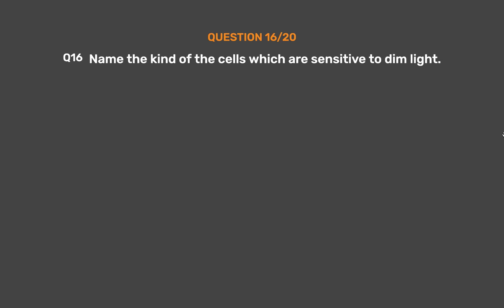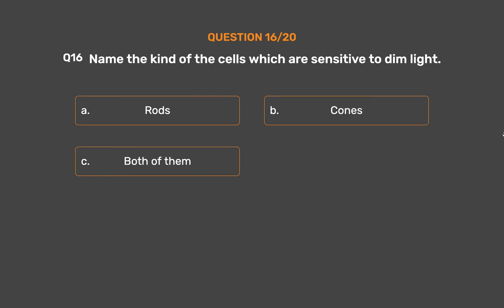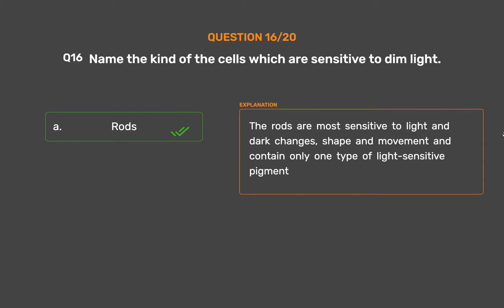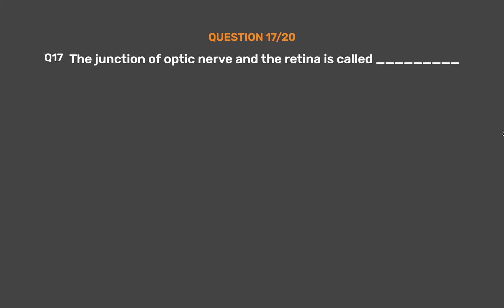Question number 16: Name the kind of cells which are sensitive to dim light. Option A: Rods. Option B: Cones. Option C: Both of them. Option D: None of these. The correct answer is Option A, Rods. The rods are most sensitive to light and dark changes, shape, and movement, and contain only one type of light-sensitive pigment.